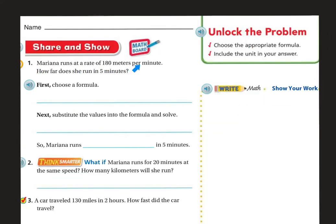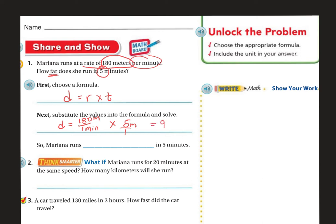Marina runs at a rate of 180 meters per minute. How far does she run in 5 minutes? Since I'm looking for how far she goes, I want the distance. So D equals rate times time. D equals 180 meters per 1 minute times 5 minutes over 1. Cross out the minutes, and 180 times 5 is 900 meters. She's going to run 900 meters in 5 minutes.